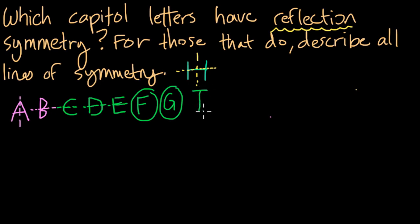How about the letter I? Well, if we draw it this way, we can see that it has both horizontal and vertical lines of symmetry, right? What about the letter J? The J has no lines of symmetry. K. Well, if we draw it like this, we can fold it in half this way with a horizontal line and get some symmetry there.